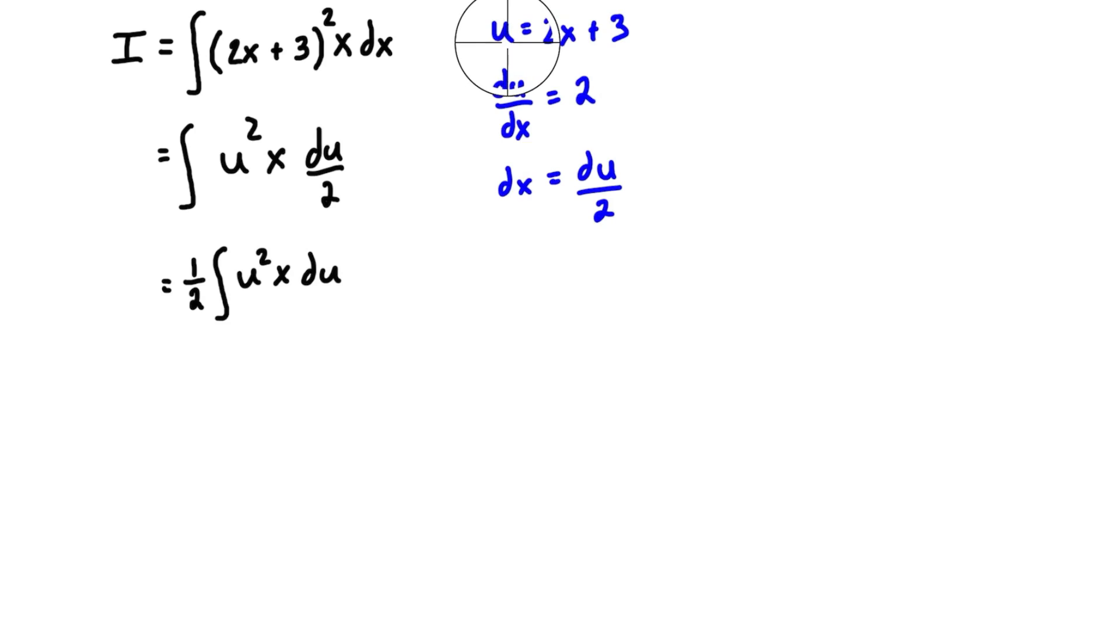What we need to do is come back up to our original equation for u and reorganize to isolate x on one side. If we do that, we get x = ½(u - 3). Now we can substitute this x expression in for this x, so this equals ½ times the integral of u² times ½ times (u - 3), all du.